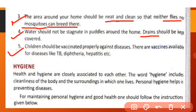Fifth precaution: children should be vaccinated properly against diseases. Kuch communicable diseases ke liye vaccine available hai jaise TB, diphtheria and hepatitis. Children ko proper vaccine disease ke against milni chahiye.